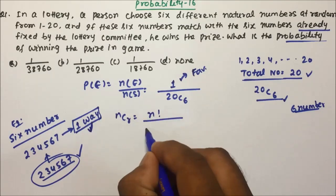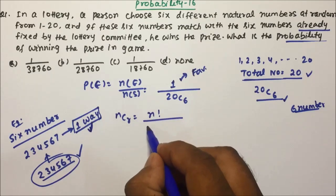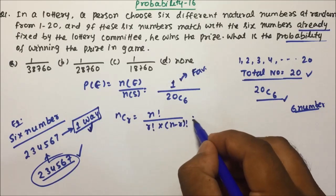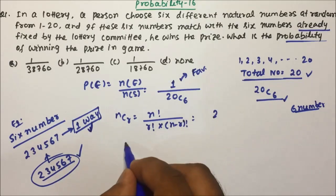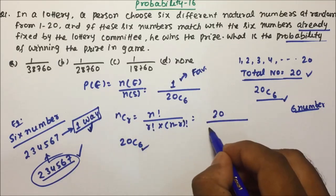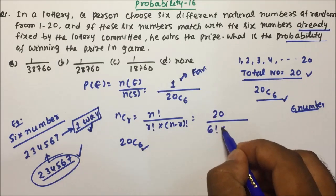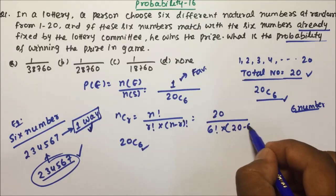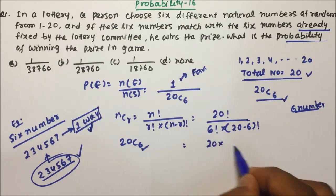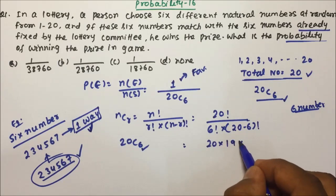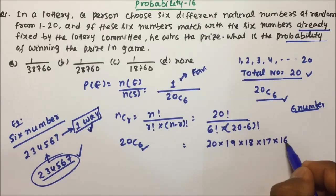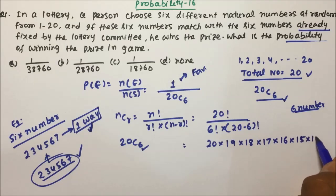Now, this if you will solve, you will be able to get the answer. NCR = N! divided by (R! × (N−R)!). So for 20C6, N! = 20!, R! = 6!, and (N−R)! = (20−6)! = 14!. Expanding, the numerator becomes 20 × 19 × 18 × 17 × 16 × 15 × 14!.